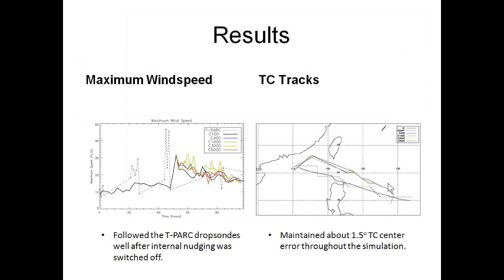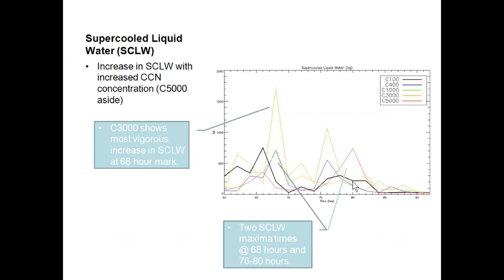The simulation actually agreed with the wind speeds very well. The track is off by about one-and-a-half degrees, so it's pretty consistent, although a lot of forecasting people make an adjustment to the track in the early stages to get it in accordance with the observed tracks, and we didn't do that — we still need to develop the algorithm. Particularly in some cases, this shows supercooled liquid water amounts — increased supercooled water, especially at 3,000 per CC.